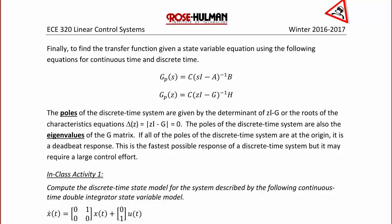The poles of the discrete time system are also referred to as the eigenvalues of the G matrix. If all of the poles of the discrete time system are at the origin, it is a deadbeat system. This is the fastest possible response of a discrete time system, but it may require a large control effort.